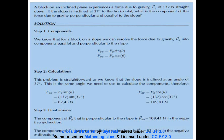Looking at the calculations, we already know that the inclined plane is at an angle of 37 degrees, which is the same angle we use for calculating the components. For the parallel component, Fgx equals Fg sin theta, which equals 137 times sin 37 degrees, giving us a force of 82.45 Newtons. For the perpendicular component, Fgy equals Fg cos theta, giving us an answer of 109.41 Newtons.